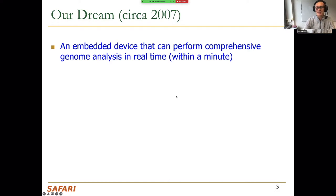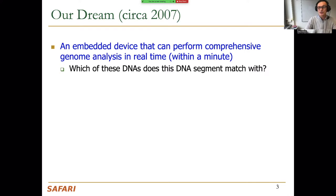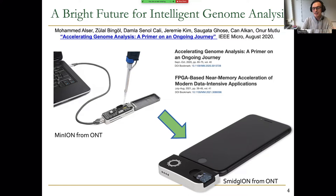About 15 years ago, we wanted to have an embedded device that can perform comprehensive genome analysis in real time within a minute. You give it to a doctor or patient, and they do their genome analysis and figure out something important — something life-critical, with personal and medical implications they don't need to share with anyone. Questions you can ask the device include: which DNA does this segment match? Can we detect virus outbreaks, variants, or genetic disposition to a drug?